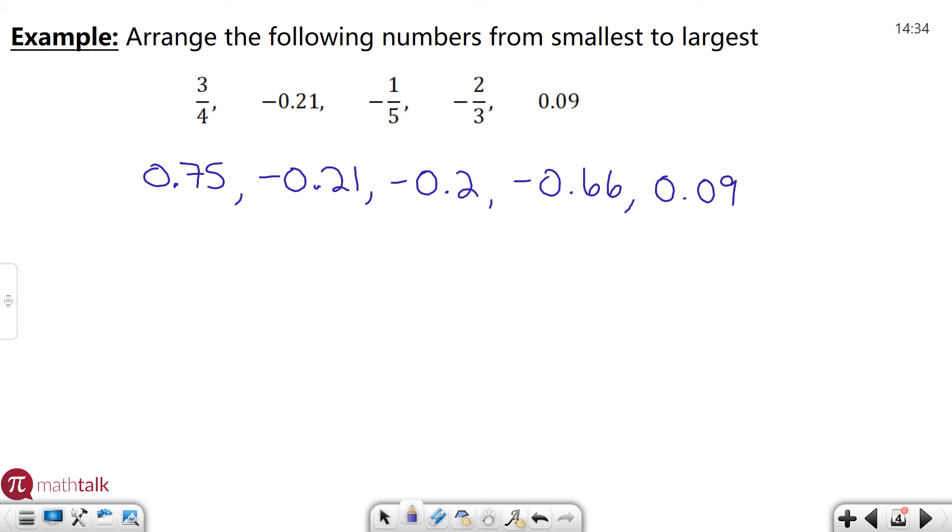We're going to go smallest to largest. The smallest number here is the one that's the most negative. So I have a couple of negative numbers here. The most negative is negative 0.66. So negative 0.66, cross that off now.